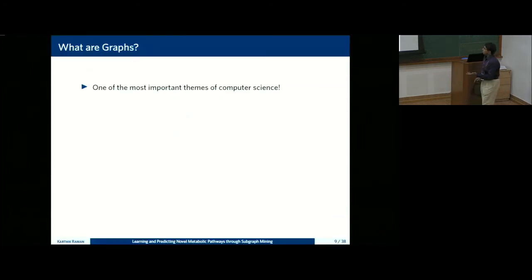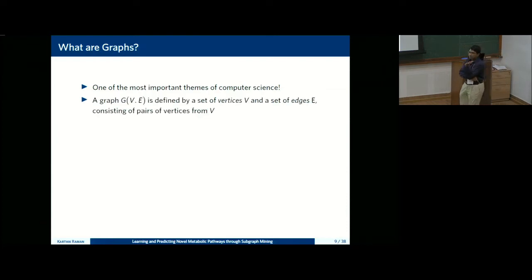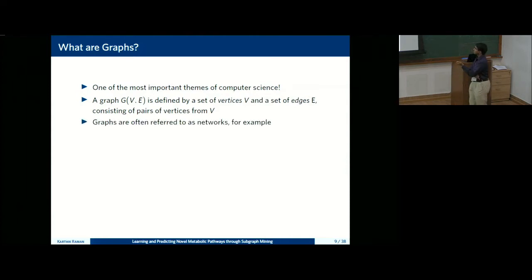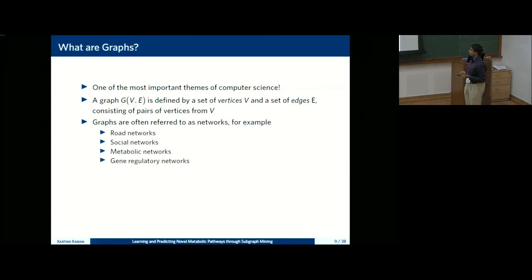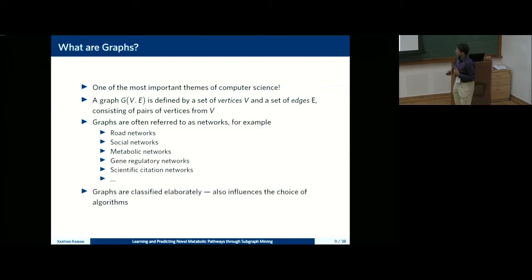What are graphs? They are defined by a set of vertices and edges — vertices are certain entities and edges represent the relationships between them. They are often referred to as networks: road networks, social networks, metabolic networks, protein interaction networks, gene regulatory networks, and so on.